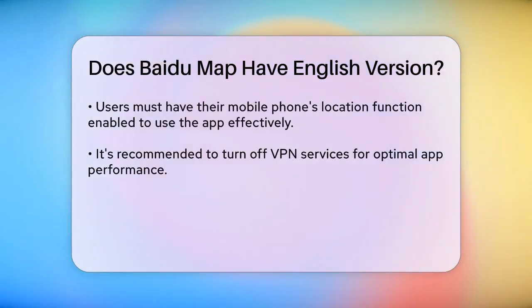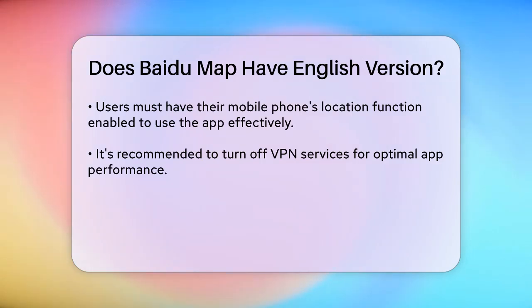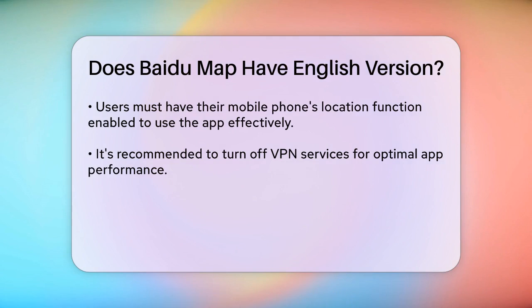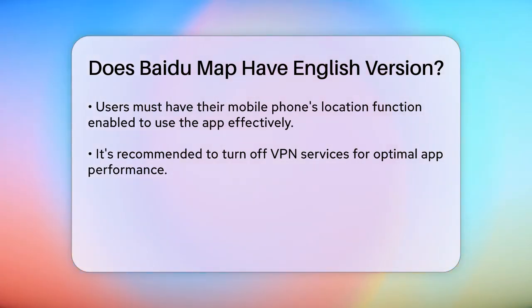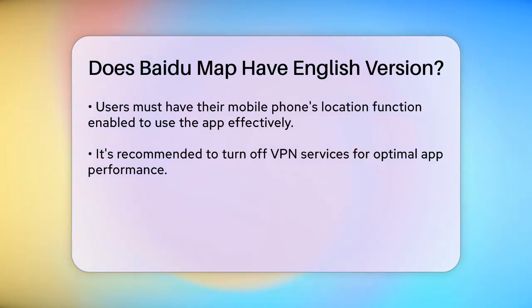To use Baidu Maps, you would need to understand some basic Chinese characters and phrases. For example, on the mobile app, you need to know what 地点 (place), lu xian, and search mean. You also need to ensure your mobile phone's location function is turned on and VPN is turned off to use the app effectively.